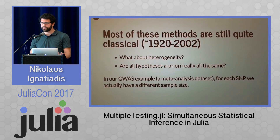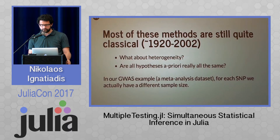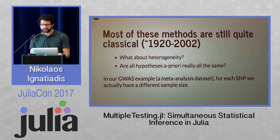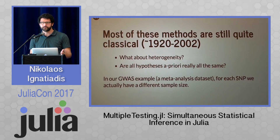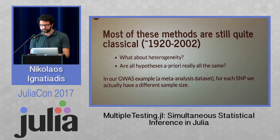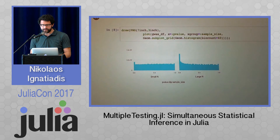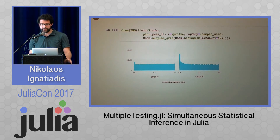Most of what I've talked about — starting with a vector of p-values and adjusting them — is very classical. The problem with this approach is that it doesn't account for heterogeneity: not all hypotheses are a priori the same. For example, in the GWAS example I showed before, this was actually the result of a meta-analysis, so for each SNP — each genetic mutation — we had a different sample size.